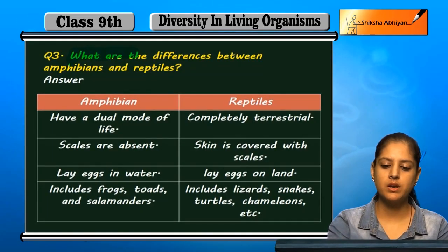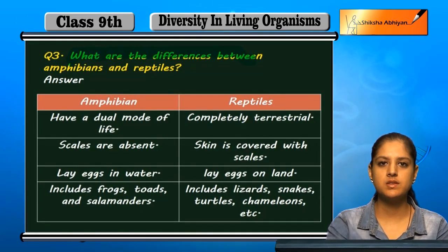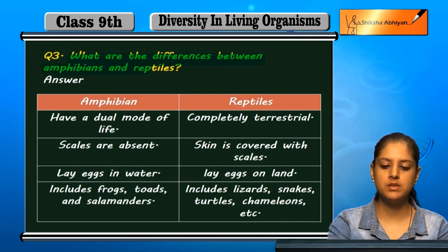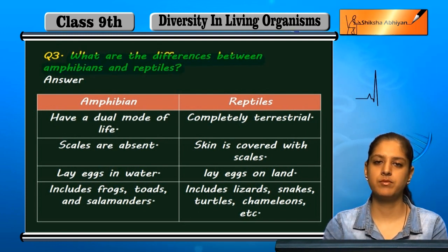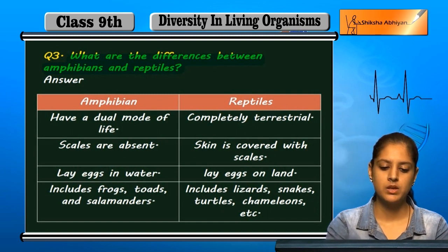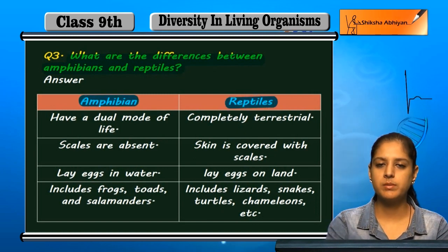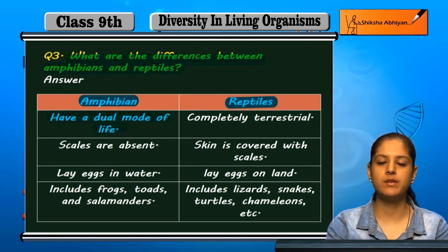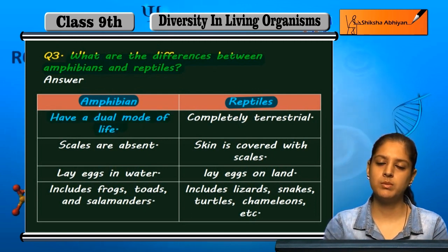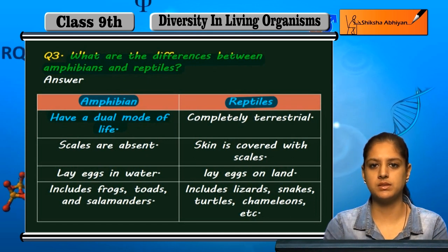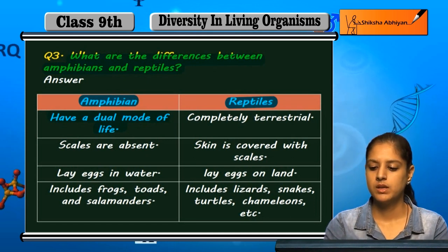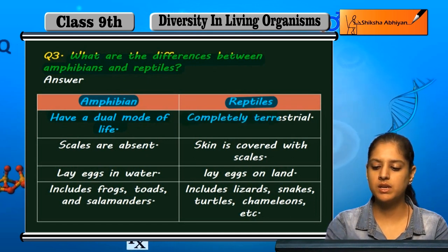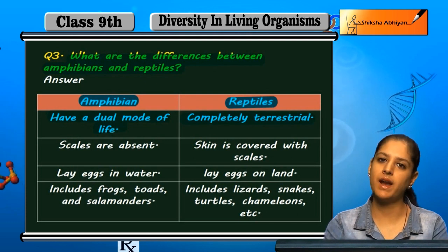What are the differences between amphibians and reptiles? Amphibians have dual modes of life — they can stay in water and on land. But reptiles are completely terrestrial; they are only on land.